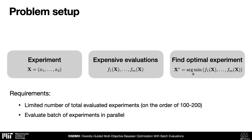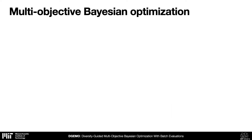In addition, in many experimental problems, you want to speed up the testing time by evaluating batches of samples in parallel. In this scenario, multi-objective Bayesian optimization has proven to be useful.